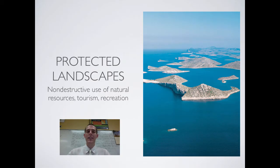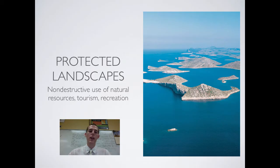Protected landscapes and seascapes are areas protected purely for their natural beauty. They are allowed to be used in a non-destructive manner — natural resources can be used, and they can be used for tourism and recreation. Examples would be protected islands or seashores where it's recognized: this is a beautiful place, it's good for humans, good for tourism, good for recreation, so we're going to take care of this area.